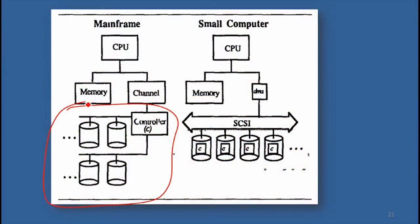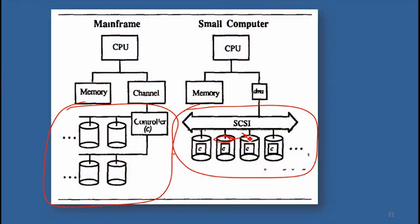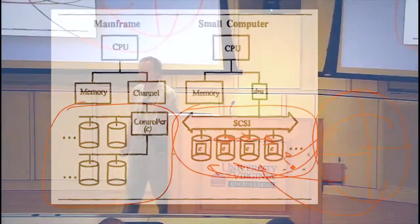That's where Redundant Arrays of Independent — or Inexpensive — Disks comes together. You can structure it so that a mainframe with a controller hooks up multiple disks, or on a PC you connect more than one disk to a bus. Once you're thinking about multiple independent disks, you have to figure out how to put your data on them. The simplest approach is to treat it like one big disk: fill up the first disk, then move to the second, and so on — as if it were one really big disk divided into four pieces.